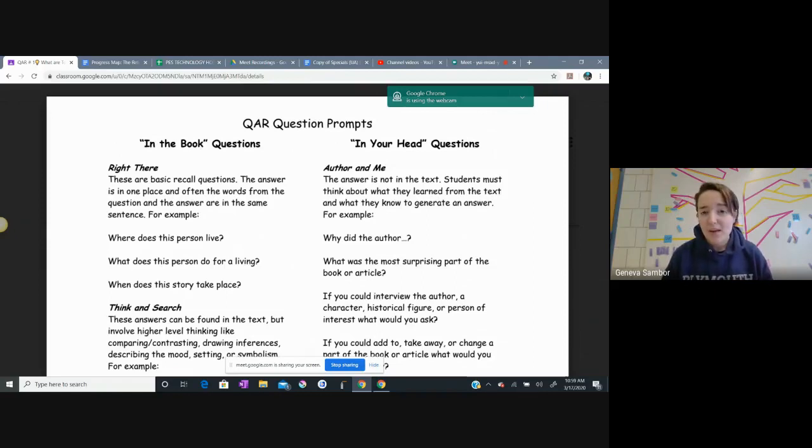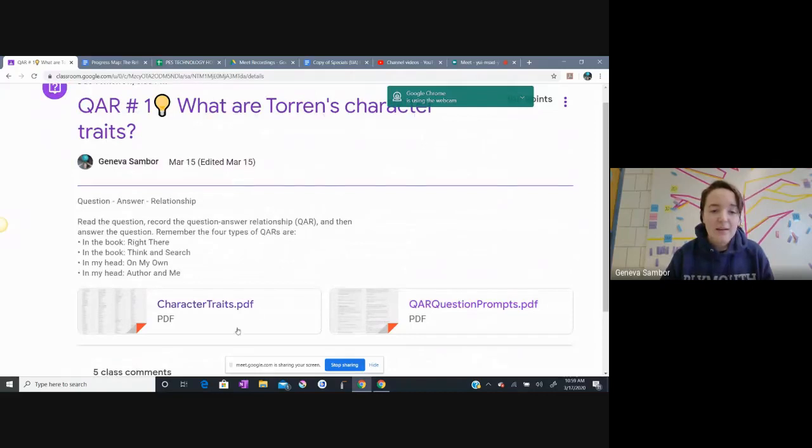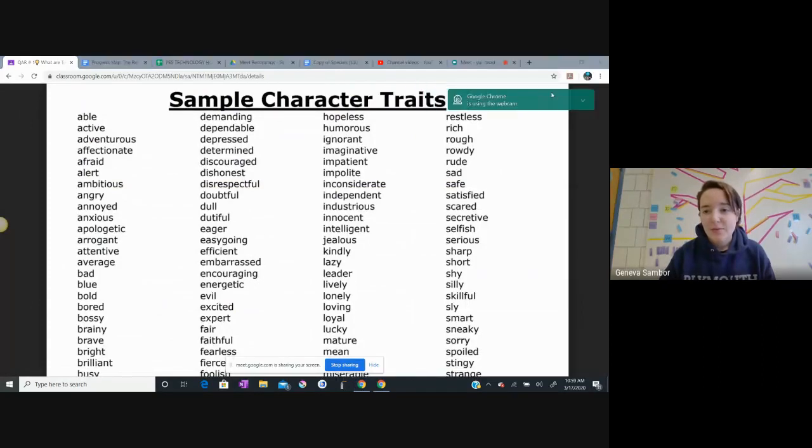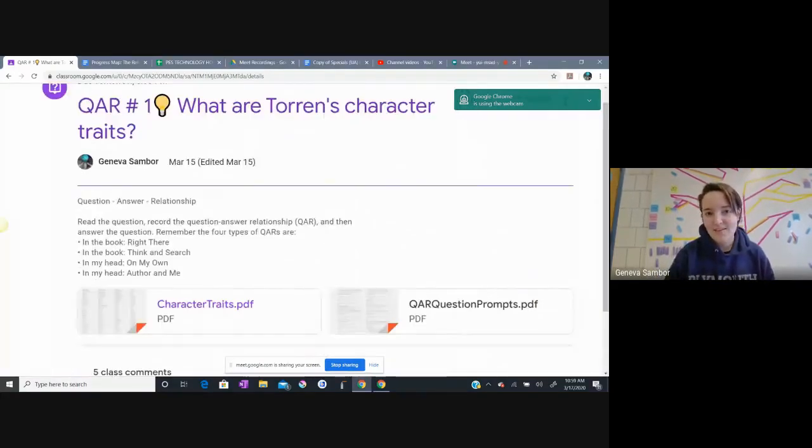And I know many of you have already had questions about QAR, but these are questions that we ask all the time as readers. And I do have this PDF available for you to look at in case you are confused. This first question here for this week is something that you can also use the character traits that I have provided as a PDF, and I have attached that for you as well. So you can use the character traits, and you can try to identify what character traits do you think Torrin has.